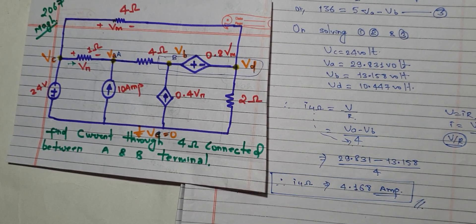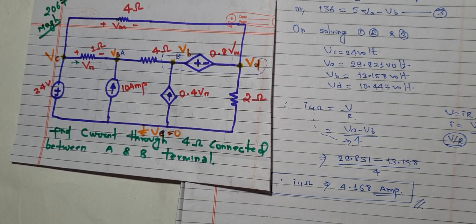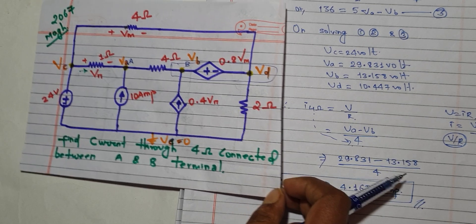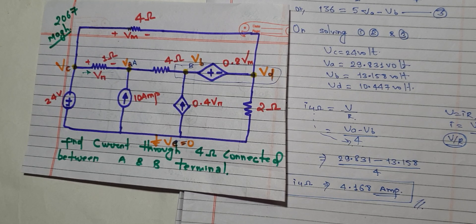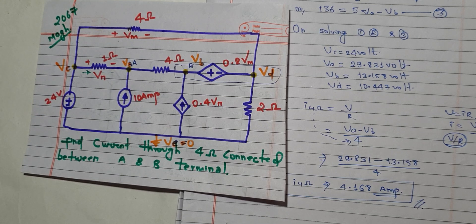The current flowing through the 4-ohm resistor between the A and B terminal is 4.168 amperes. We solved this in an easy way using the nodal analysis concept with a super node. The plus-minus sign and super node concepts should now be clear. If this topic or question was difficult before, it should now be easy. Please share this video with your friends. Thank you for watching.